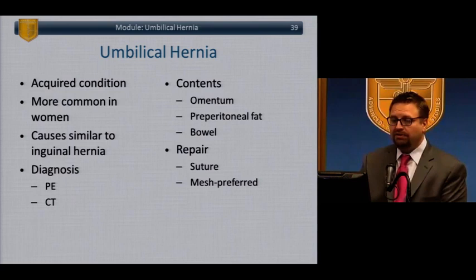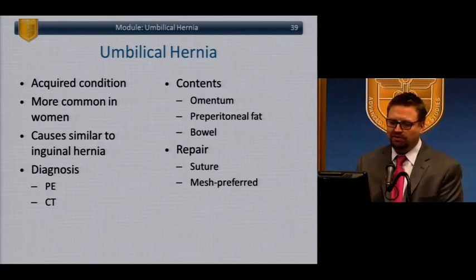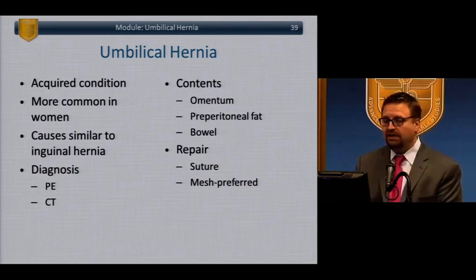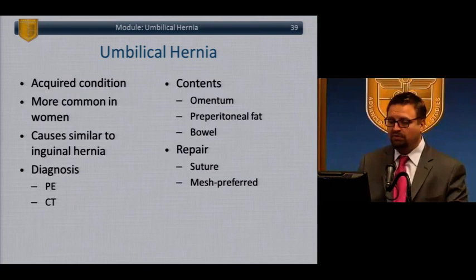Umbilical hernia is more common in women. Risk factors are similar to inguinal hernia. Diagnosis is on physical exam; CT can help assess contents and defect size. Contents are usually omentum, preperitoneal fat, and often some bowel. These can be fixed with direct suture repair or mesh repair, which is usually the preferred approach.